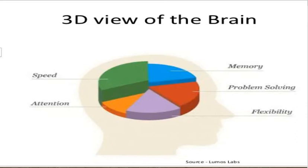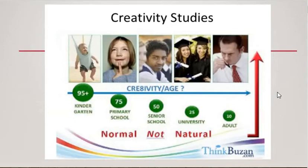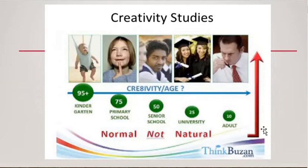Creativity is very important here, especially in making your mapping. Based from creativity studies, as you grow older, you are less creative. That is normal — it's normal that as we grow old, our creativity also continues to change. That's why it's very good for us to have a map so we can see where we can really study the topics we have chosen.